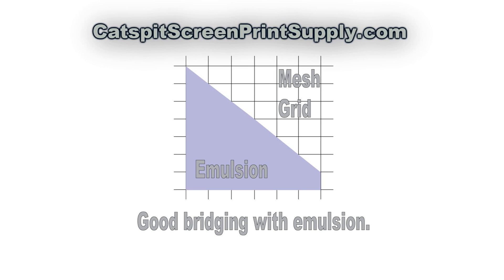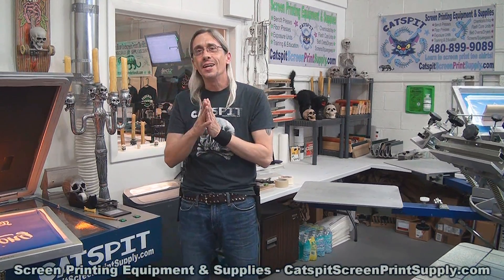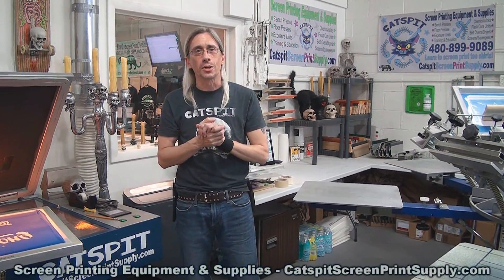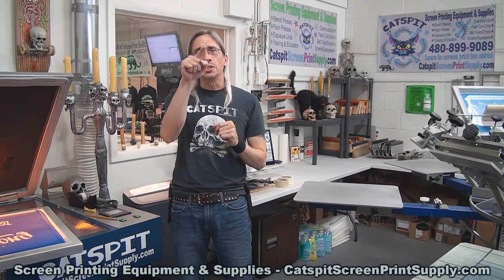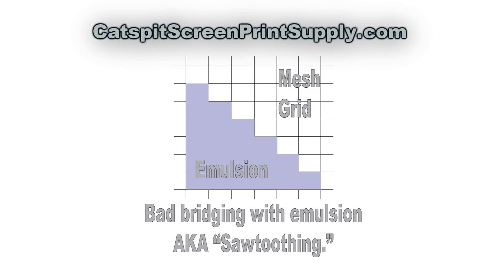When emulsion does not have good enough bridging characteristics, it does not bridge the grid squares from corner to corner — it takes edge to edge. So instead of bridging diagonally from corner to corner, it goes right into the corner at 90 degrees. That's what is known as sawtoothing.